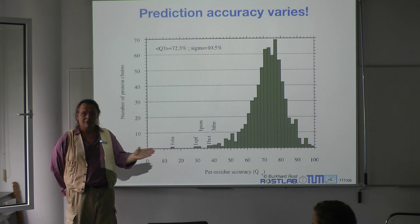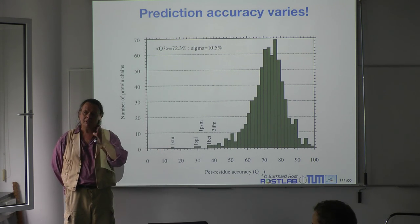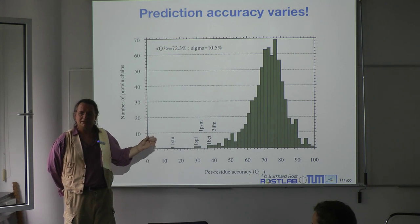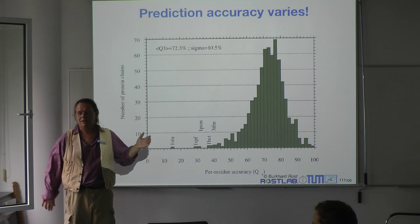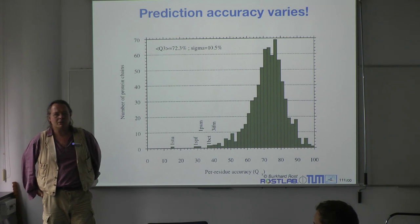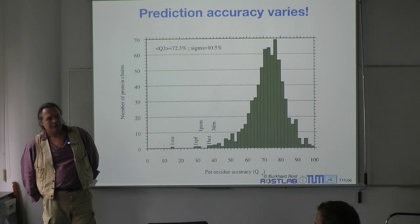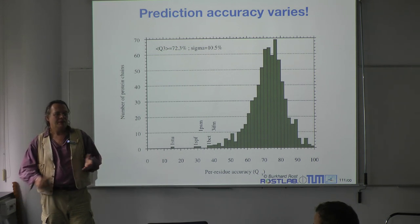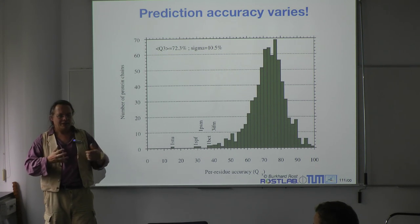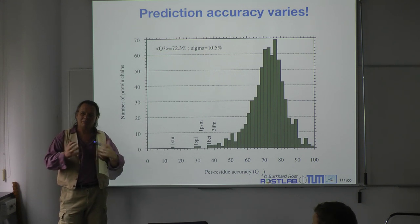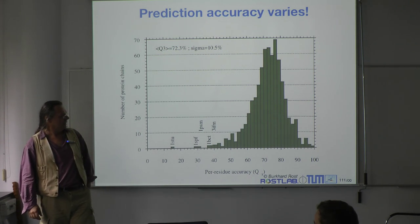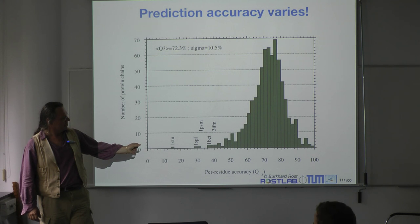For long proteins, alignments go wrong — but that knowledge didn't really help. It helped to know that the method works best on globular domains, but I don't know how to identify the domain without secondary structure prediction — a chicken-and-egg problem. So that didn't work either. But there is something that we possibly could do: let's get back to what the method does.